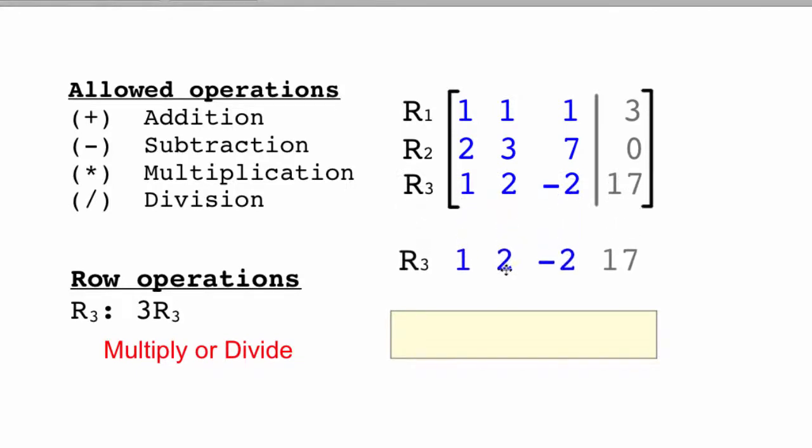Here's how it works. You take row 3, multiply everything by 3. That becomes 3. This becomes 6, negative 6, and over here is 51. And then you put it back.